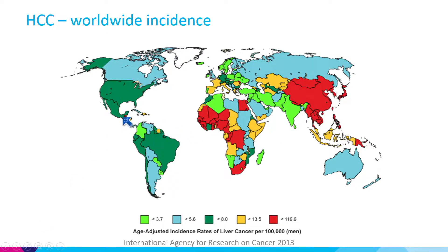The US is intermediate incidence, overall about 8 per 100,000 in men. Certain areas in the US actually have higher incidence in urban centers. Like in New York City, the incidence can go up to 18 to 20 per 100,000 in certain neighborhoods, like the Bronx, Queens, or Harlem.